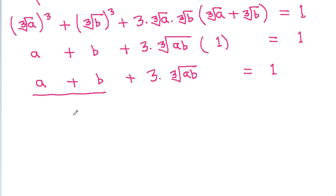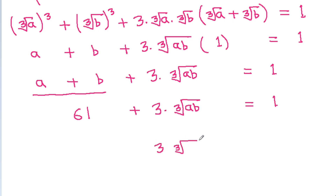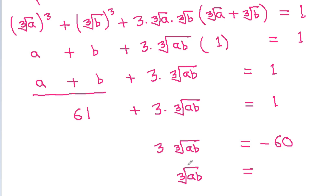So a plus b is 61, plus 3 times the cube root of ab is equal to 1. And 3 times the cube root of ab will be equal to 1 minus 61, which is minus 60. So the cube root of ab equals minus 60 divided by 3, which is minus 20.